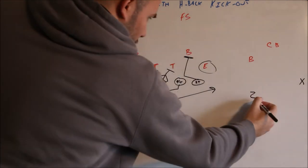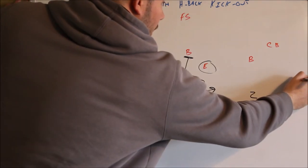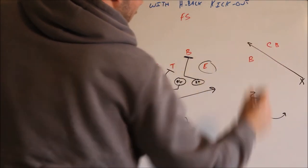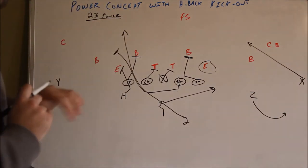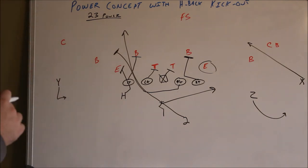Now, over to the twin side, the Z is going to run a bubble, and the X is going to run a quick slant. And then the single receiver, the Y here, is going to fake a quick screen or now screen, whatever you want to call it.